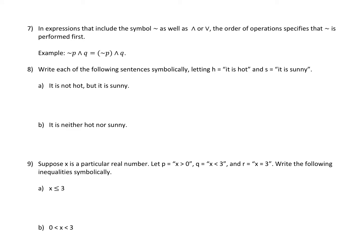In expressions that include not as well as and or or, the order of operations for logical operators is: not is performed first — you can think of it as multiplying by negative one. And and or are like addition, while not is like a negative sign, so we do the negative first. Writing sentences symbolically, letting H be 'it is hot' and S be 'it is sunny': 'It is not hot but it is sunny' — but means the same as and — translates to not-H and S.